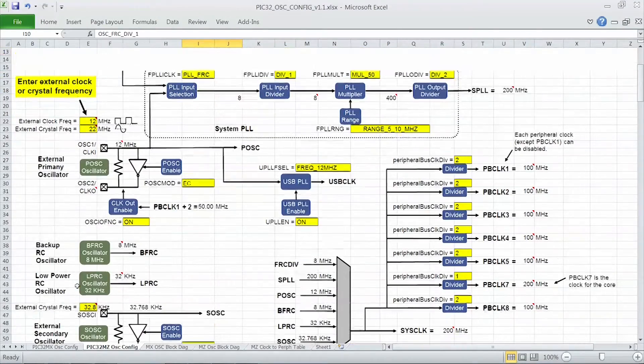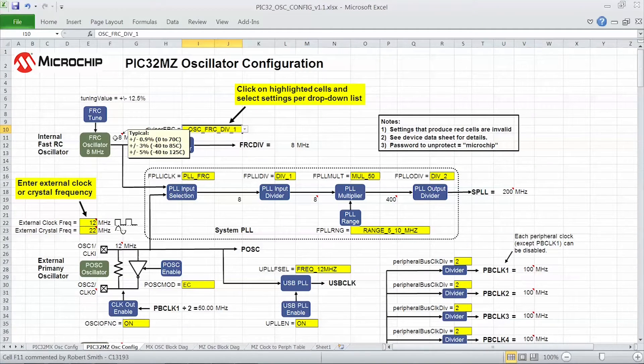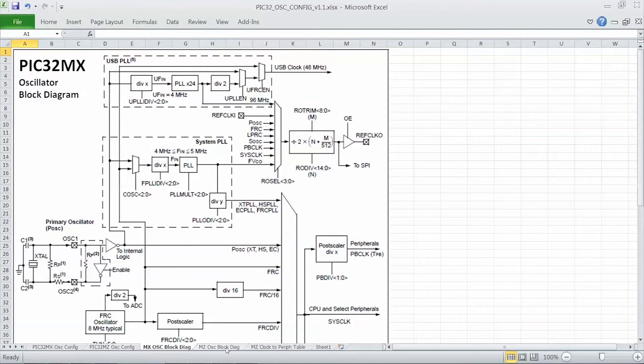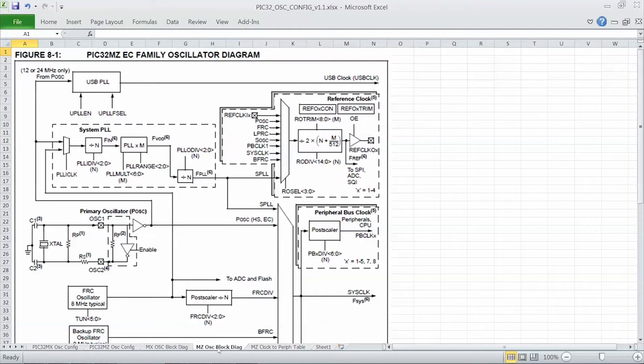You'll note some of the cells have little red triangles, indicating there is a comment associated with it. You'll also note there are different spreadsheets for the PIC32MX and PIC32MZ families, and I've also included the oscillator system block diagrams found in the datasheets.